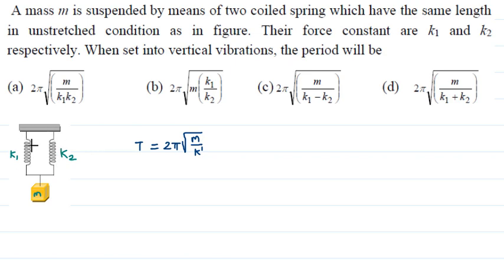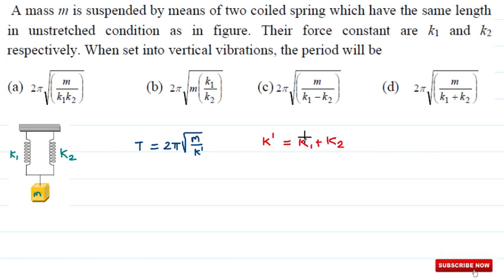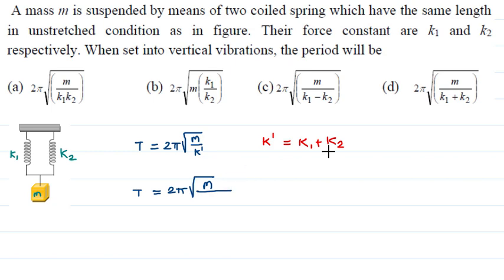Here both springs are connected in parallel combination. For parallel combination, the effective force constant k-dash equals k1 plus k2. Substituting this value, the final time period T equals 2π under root of m upon (k1 plus k2). This is the answer — option D is the correct one.